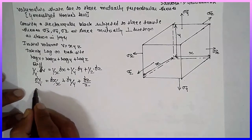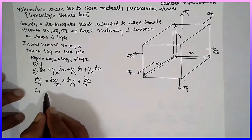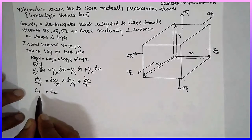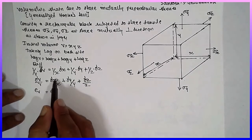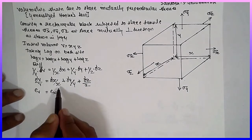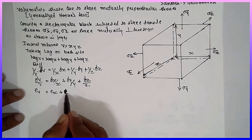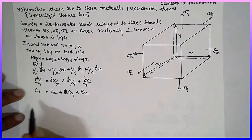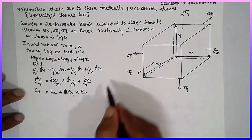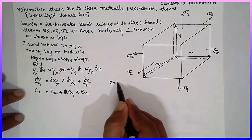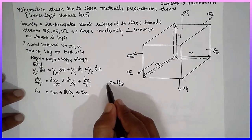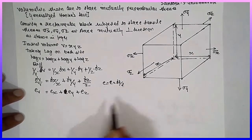Delta V by V is called eV — the volumetric strain. Delta x by x is nothing but eX, and so on. So eV equals eX plus eY plus eZ. Strain is defined as change in length divided by original length; it can be written as epsilon or small e.